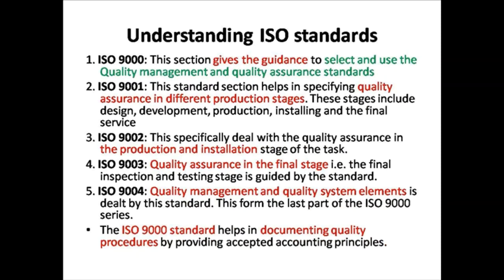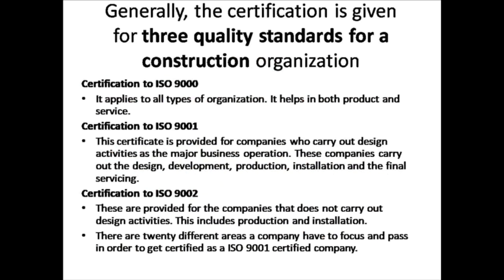Understanding ISO standards: ISO 9000 provides guidance to select and use quality management and quality assurance standards. ISO 9001 helps in specifying quality assurance in different production stages. ISO 9002 deals with the production and installation stage. ISO 9003 deals with quality assurance in the final stage. ISO 9004 deals with quality management and quality system elements. ISO 9001 also helps in documenting quality procedures by providing accepted accounting principles.